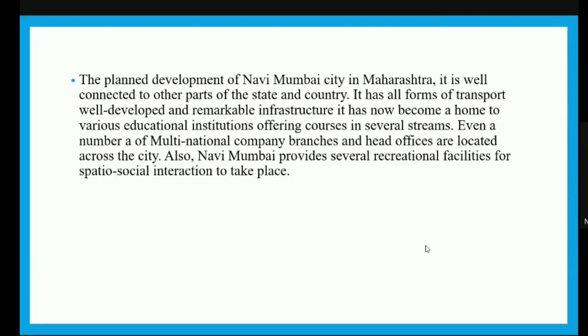Another example is Navi Mumbai, which has a planned development, is well connected to other parts of Maharashtra and the country, and has all forms of well-developed transport infrastructure. It is home to various educational institutions and several multinational companies with branches and head offices located there. Navi Mumbai provides recreational facilities for spatial social interaction. This illustrates that accessibility to a place depends on the availability of transport — a well-connected transport network means the area will flourish with more economic and social opportunities.